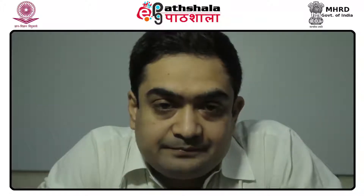The approach here for finding the parameters will be in terms of minimizing the residual sum of squares. In ordinary least squares, we find the estimates by minimizing the sum of squares of errors. We have a mean model y = Xβ, so the estimate of the residuals is y − Xβ, and we minimize the function (y − Xβ)ᵀ(y − Xβ).